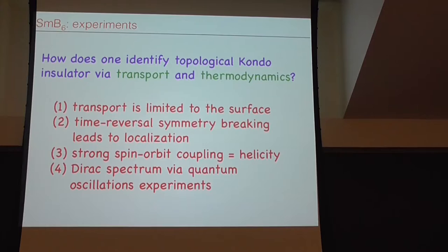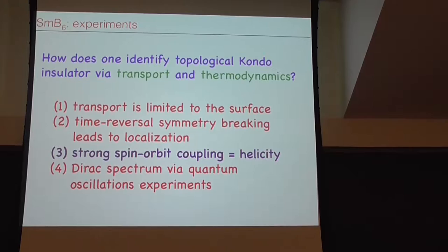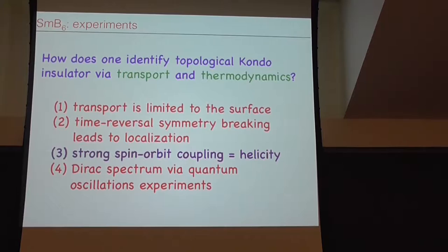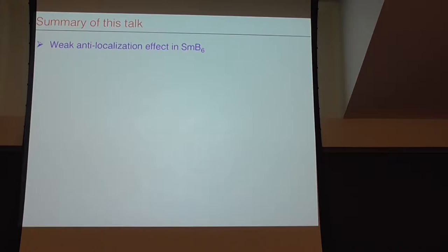So the question is if this effect is due to the surface state, if this insulator is due to the Dirac electrons on the surface - whether SmB6 is topological insulator or not. This is the topic of this conference. The way I'm going to present now, I'll pose this question: how one can identify if the material is topological Kondo insulator via just transport measurements and thermodynamic measurements.